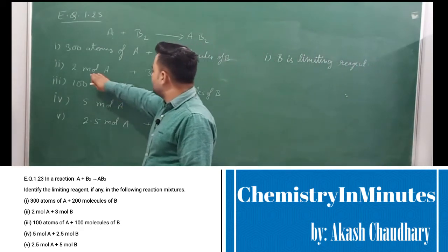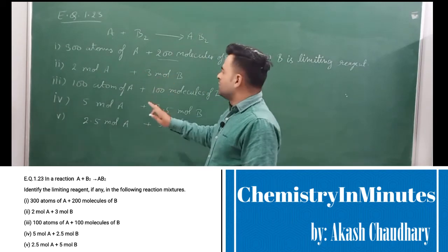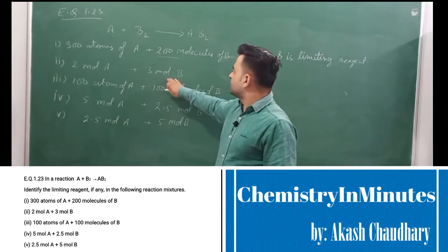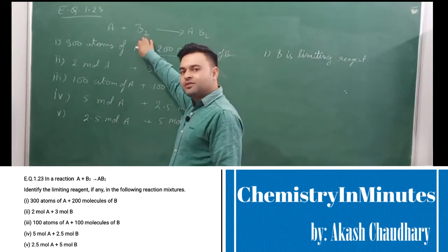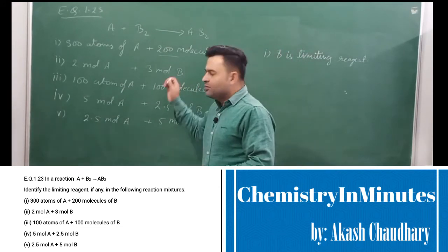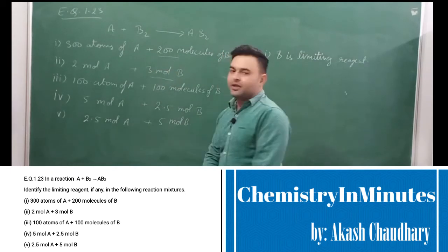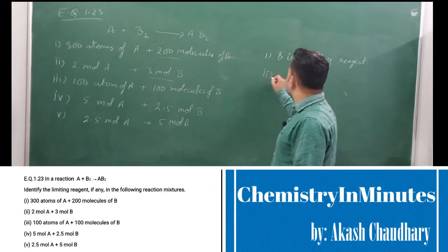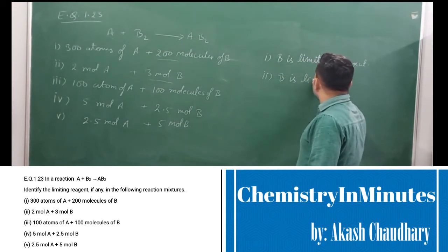In the second case, we have 2 moles of A and 3 moles of B. Here, 2 mole atoms of A and 3 mole atoms of B — since B₂ molecules are diatomic, B is in excess relative to the stoichiometric requirement. In the second case, B is the limiting reagent.